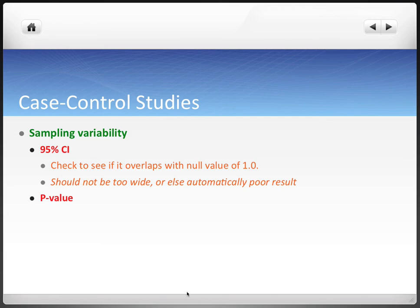The problem with case control studies is that prospective cohort studies are superior because they can measure exposure prior to the onset of disease. With case control studies, you're looking back in time, so someone could have gotten the disease and then been exposed to the supposed risk factor — you wouldn't know. That's the key limitation of this study design. We also have to account for sampling variability and check if the confidence interval overlaps with the null value of one.